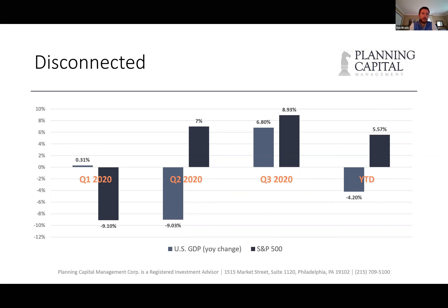Interestingly, in Q2 the market was up 7% as GDP just plummeted. Year to date, the GDP is down about 4% — and this is an estimate because the Q3 numbers are not finalized yet — while the market is up close to 6%. So the disconnect is pretty palpable.